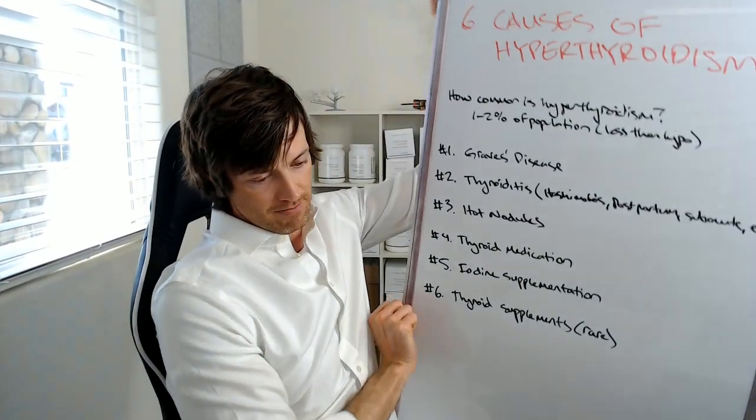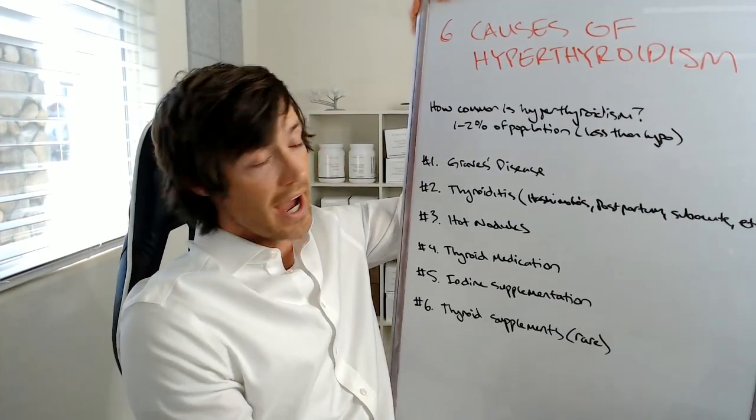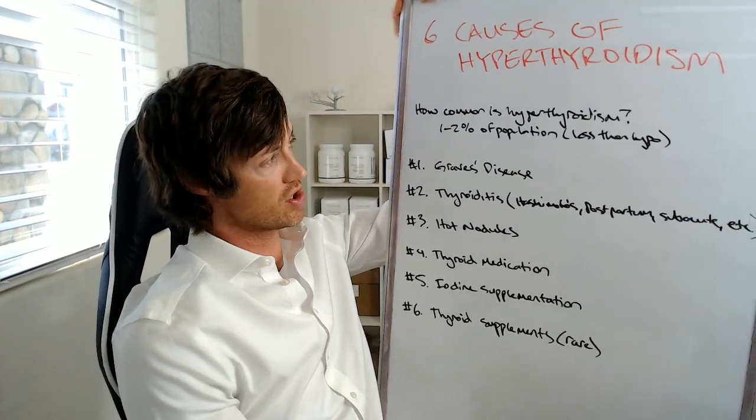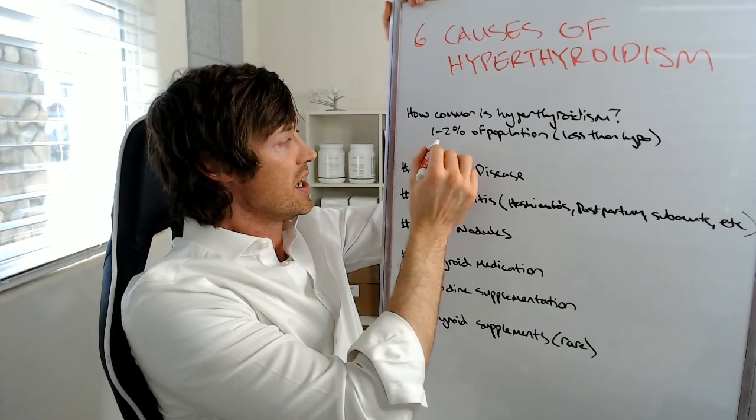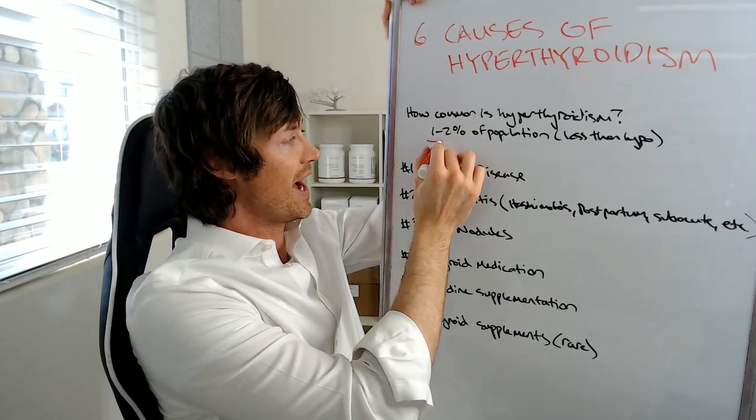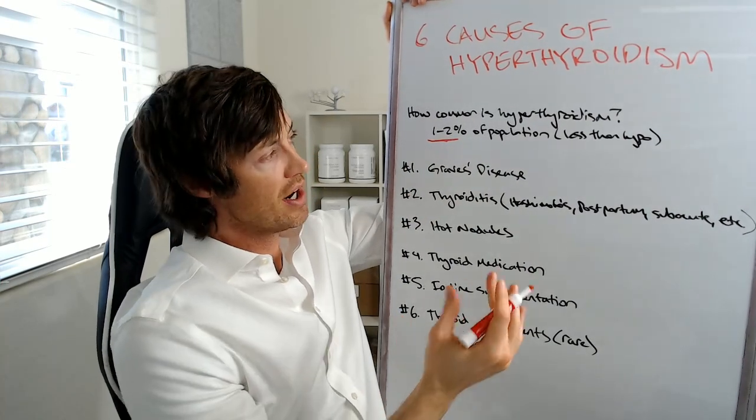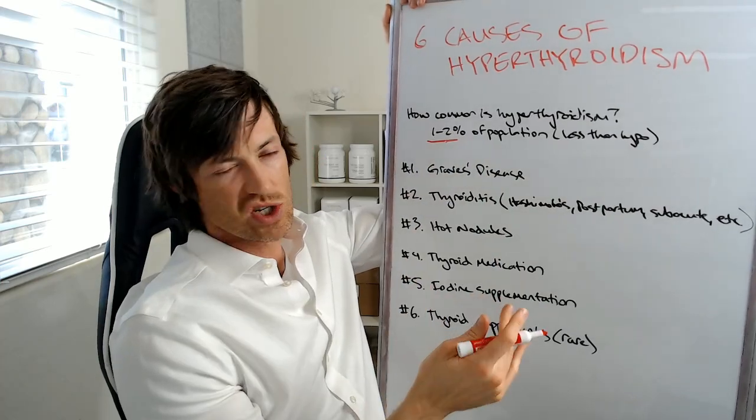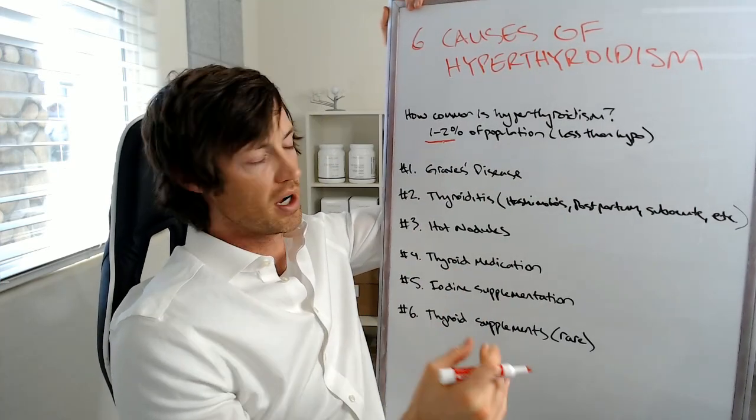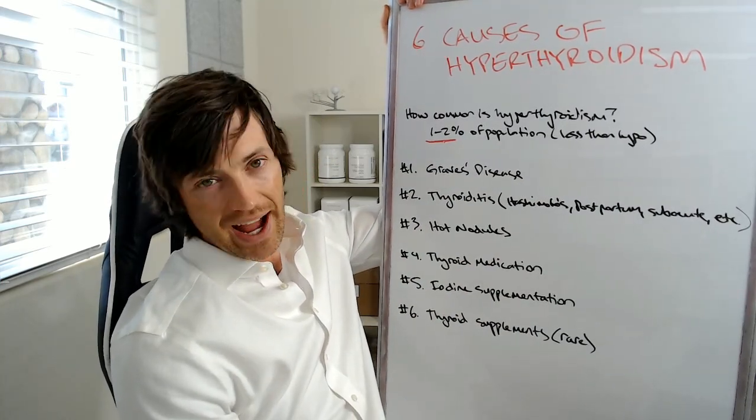Now I spend a lot of time talking about hypothyroidism, meaning low thyroid function. And one of the reasons is because there are far fewer people who have hyperthyroidism. So when you look at the numbers, there are only about one to two percent of the population, maybe three, maybe four percent, depending on which study you're looking at that have hyperthyroidism.